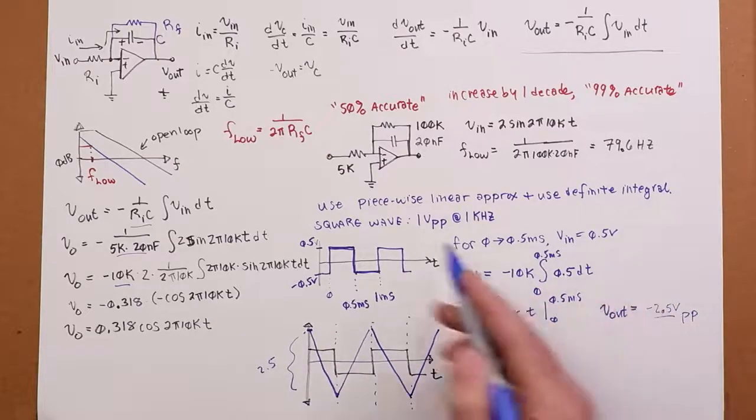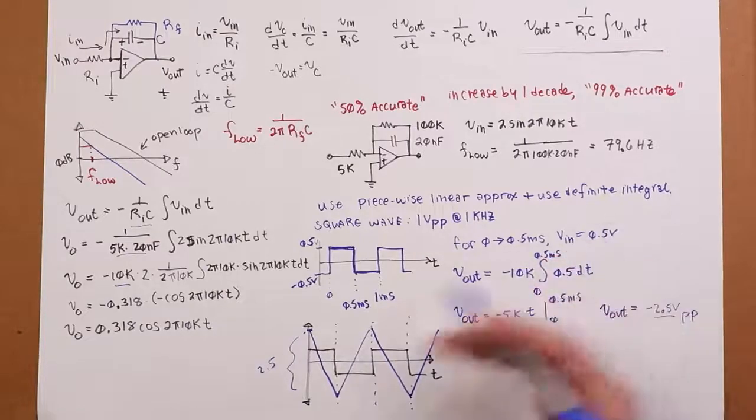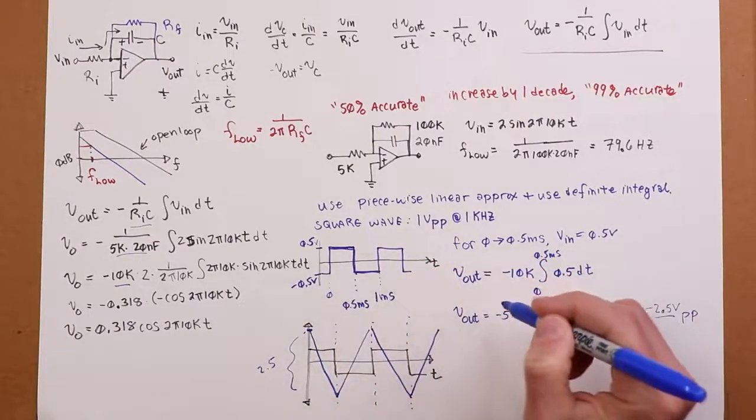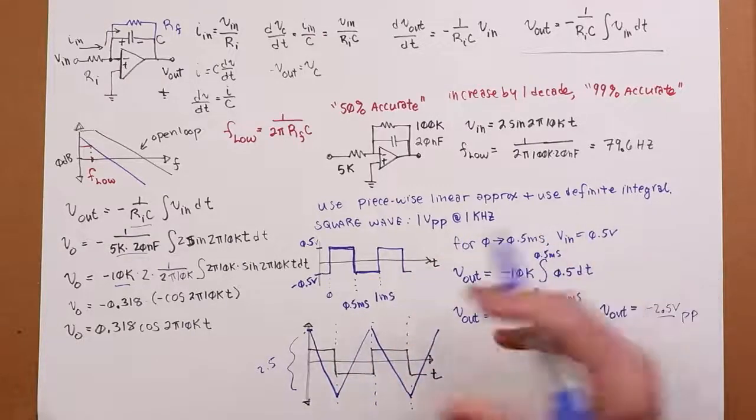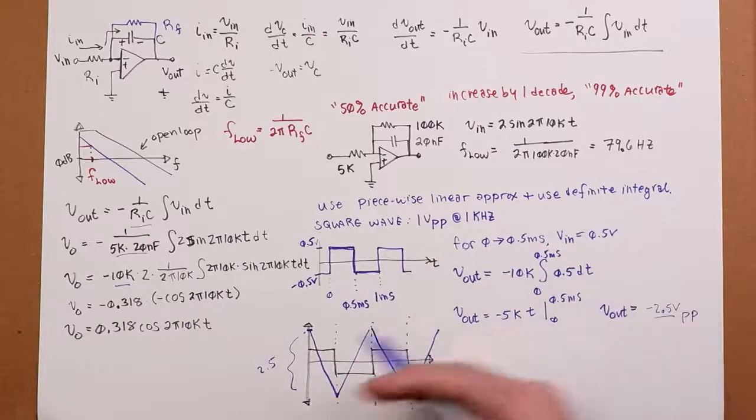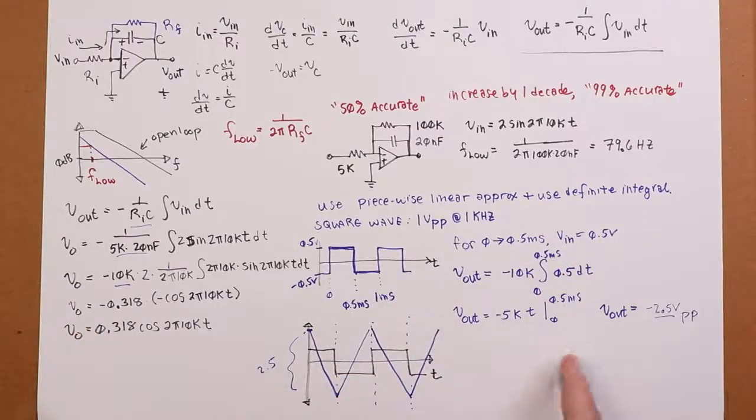So, you integrate a square wave and you get a triangle wave. At least this way, using the definite integral, you have an idea of what it looks like. Otherwise, like I said, you're going to come up with this infinite series of sine waves. It turns into an infinite series of cosine waves. Do you know what that looks like on a scope? Well, not necessarily. So, this is another technique that you can use. But, there you go. There's a circuit that will integrate your signals for you. Useful little thing.